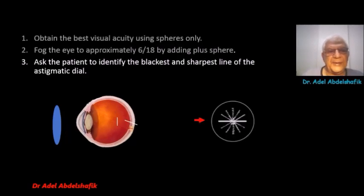Then, we ask the patient to identify the blackest and the sharpest line of the astigmatic dial. In this example, this horizontal is the sharpest and the blackest.